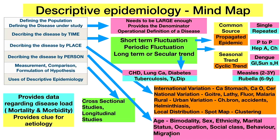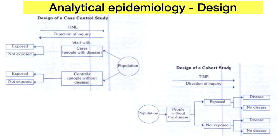The purpose of collecting time, place, and person data in descriptive studies is mainly to find out the etiology — to get a clue. Using statistical methods for measurement and comparison of data, we can generate a hypothesis about approximate etiology. Uses of descriptive epidemiology: it provides mortality and morbidity data and gives a clue regarding the etiology of a disease condition. However, to prove the exact association, we must move to analytical epidemiology study designs.